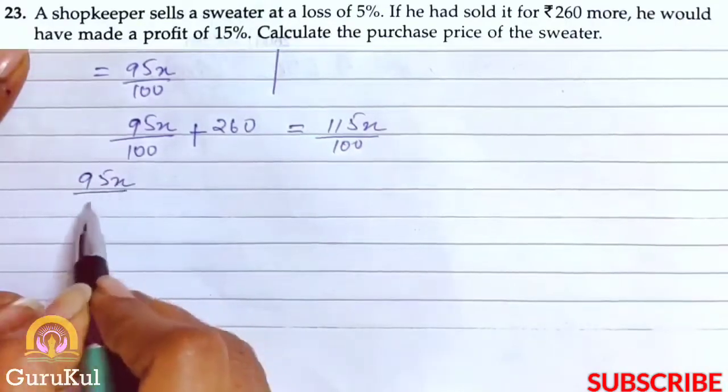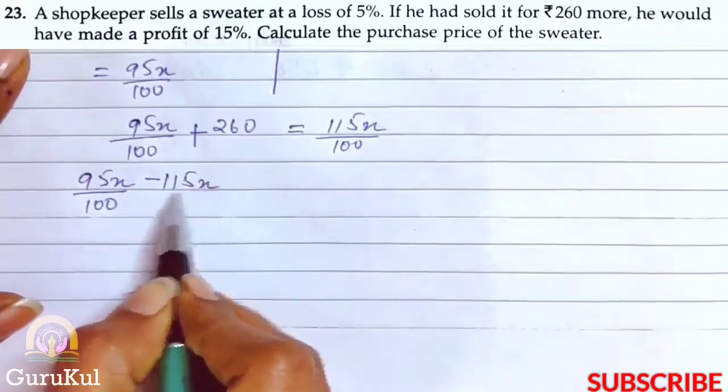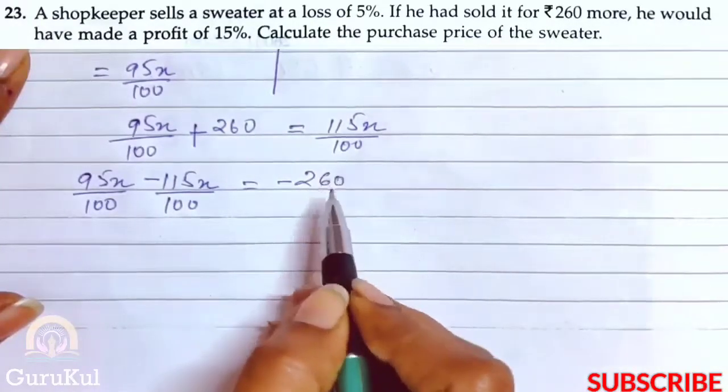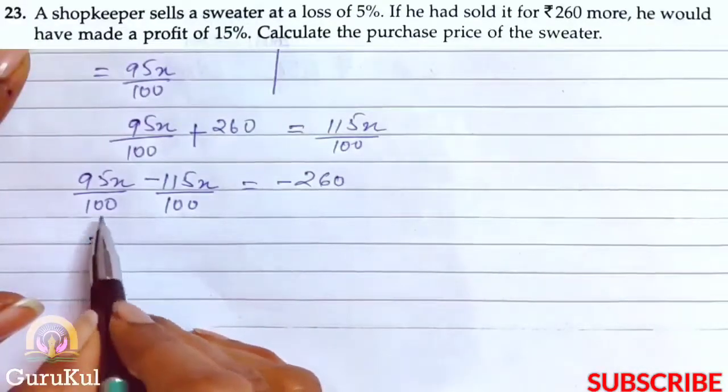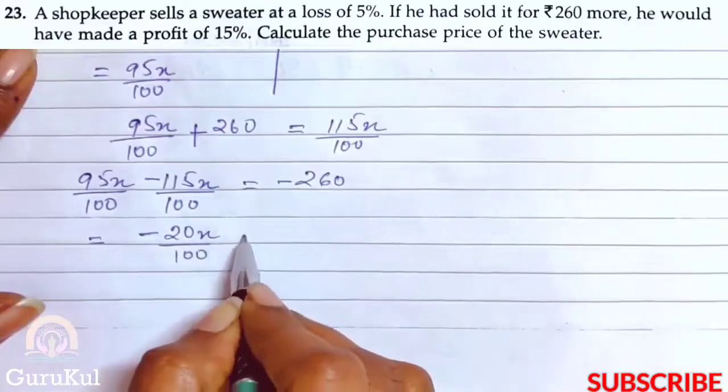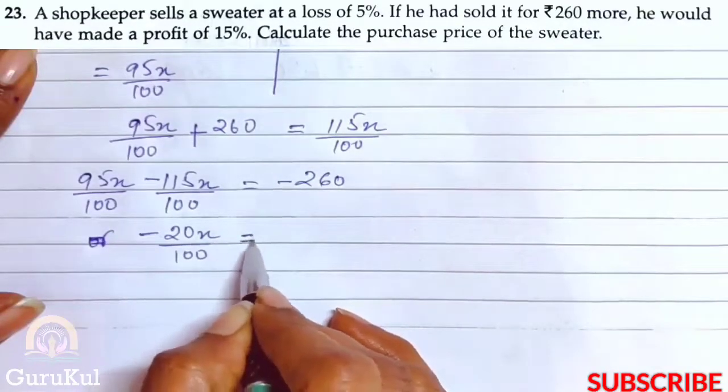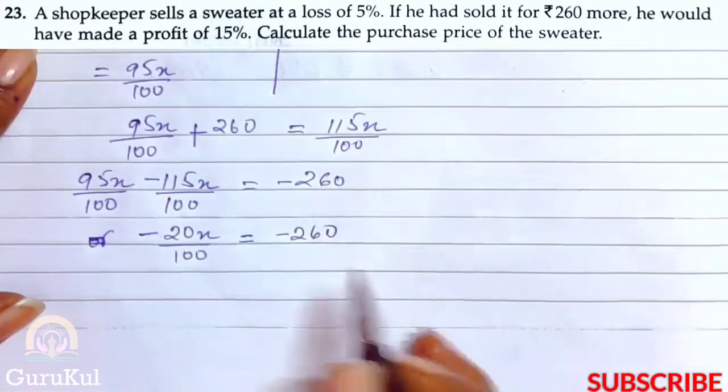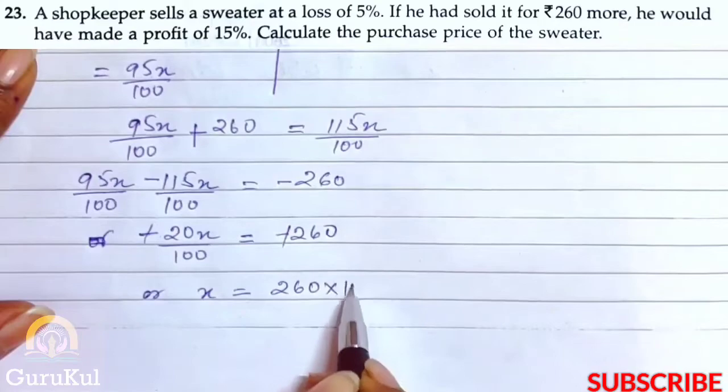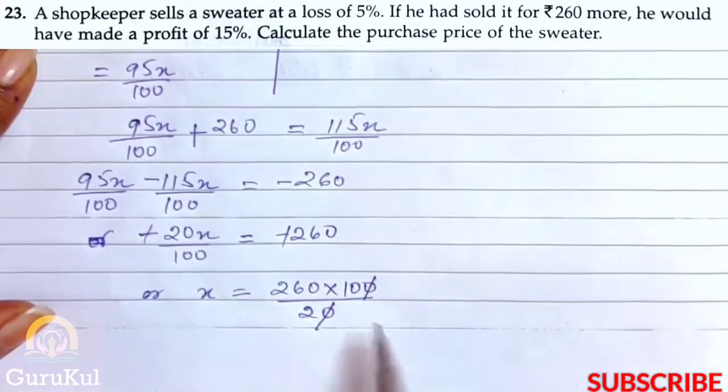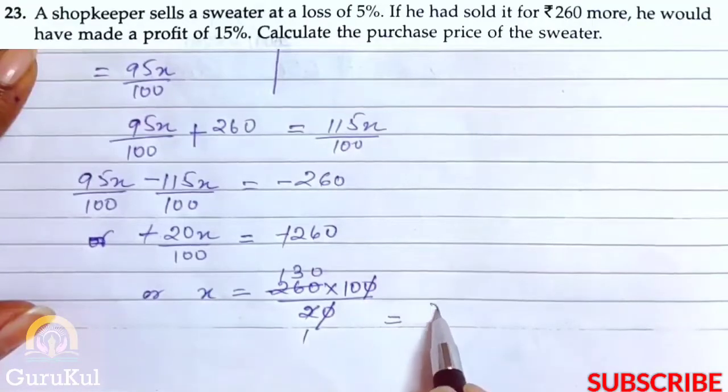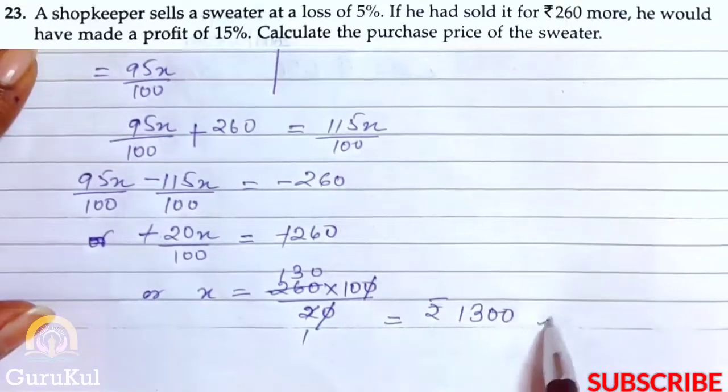We'll move all x to one side. When we move from one side to another, the sign reverses. So 95x minus 115x gives minus 20x by 100 equals minus 260. Minus and minus cancel. So x equals 260 times 100 divided by 20 through cross multiplication. Simplifying gives rupees 1300, and this is the answer.